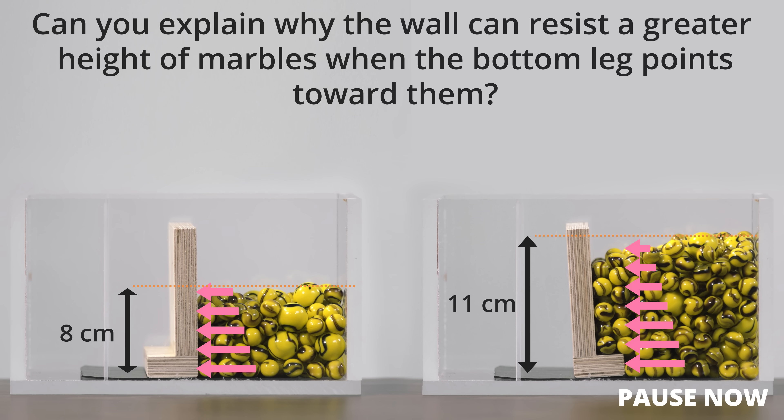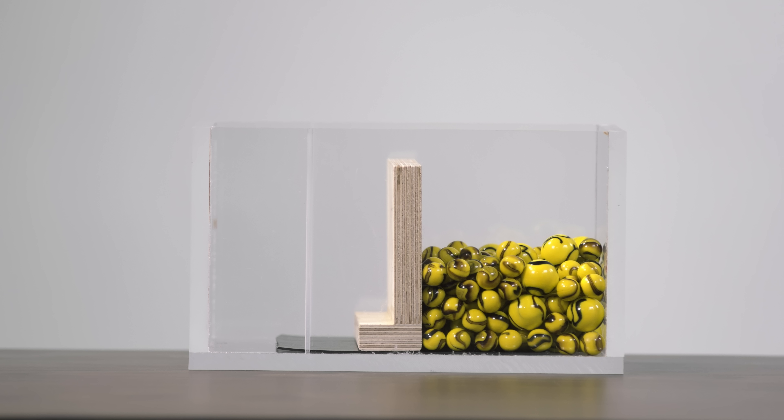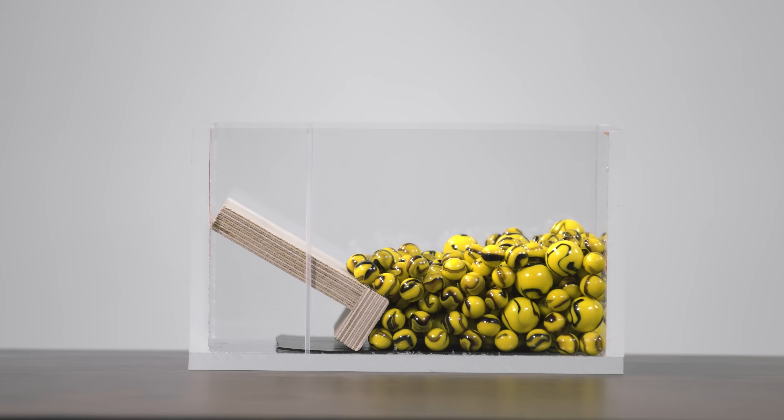Can you explain why the wall can resist a greater height of marbles when the bottom leg points towards them? Is there an additional force that comes into play? Recall that granular materials generate both horizontal and vertical pressures. When the bottom leg is oriented away from the marbles, overturning is resisted only by the weight of the wall itself, and so it overturns easily.